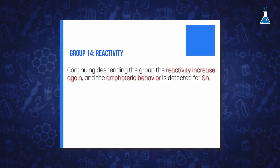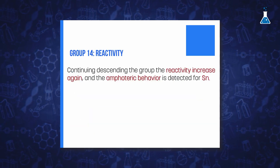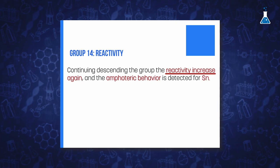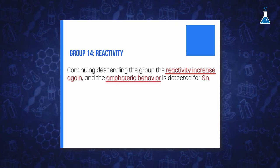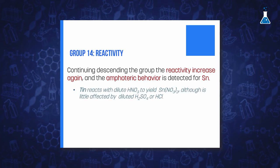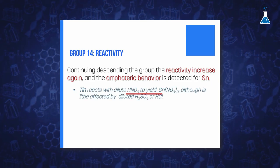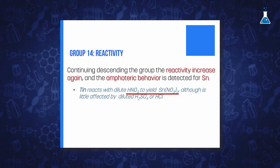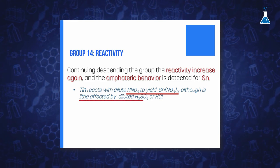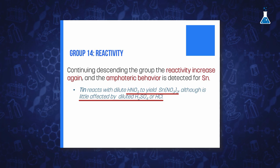As we continue descending the group, we observe again the increase in reactivity and we start detecting a markedly amphoteric behavior. Tin, for example, reacts with diluted nitric acid to form tin 2 nitrate, although it is little affected by diluted hydrochloric acid or sulfuric acid.